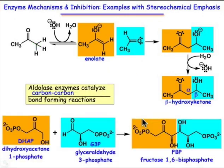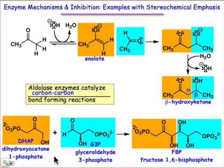Let's take a look at the actual example we want to study. It's an aldolase enzyme which catalyzes this kind of carbon-carbon bond forming reaction. The two substrates involved: the nucleophilic one is dihydroxyacetone 1-phosphate, whose structure is shown here. It's the position that has the hydroxyl group that is going to serve as the nucleophilic carbon, and that's going to react with the electrophile — the carbonyl of glyceraldehyde 3-phosphate, whose structure is shown here.